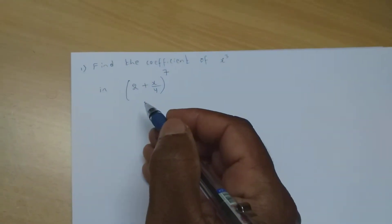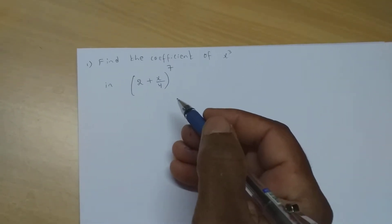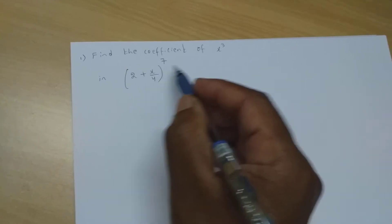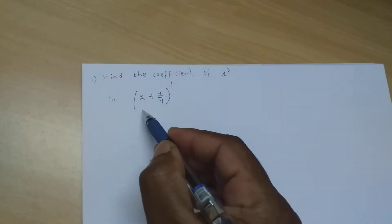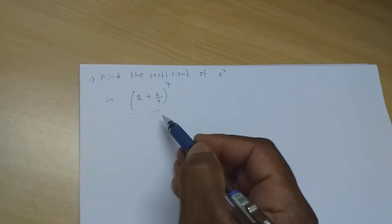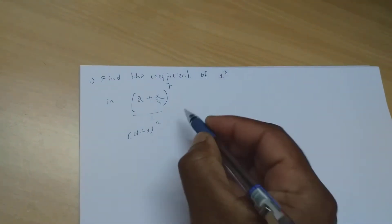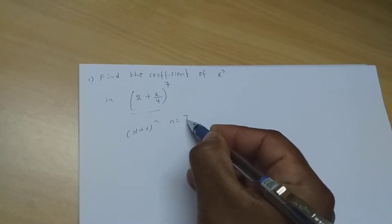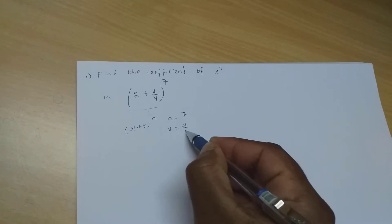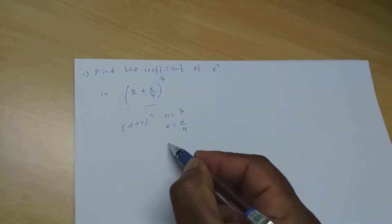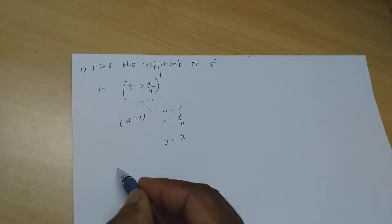Good morning students. Today's class is a continuation of binomial theorem. Let us say they have asked you to find the coefficient of x³. For this you need to write the general term. Comparing with (x + y)^n, the value of n is 7, in place of x I have x/4, and in place of y it is 2.